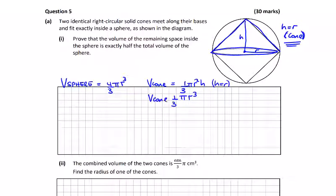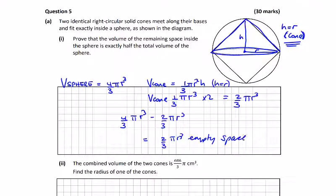So that's the volume of my cone. Times two is equal to two thirds pi r cubed. So what's left is the total, which is four thirds pi r cubed minus two thirds pi r cubed, which is equal to two thirds pi r cubed. And what are we asked here? Prove that the volume in the remaining space, that's two thirds, the remaining empty space is exactly half the total volume of the sphere, which it is. Two thirds, which is equal to half total volume of sphere.